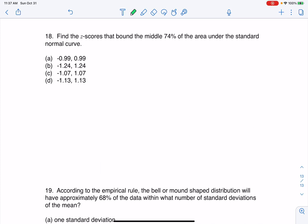Hey everyone, let's look at 18. Find the z-scores that bound the middle 74% of the area under the standard normal curve. All right, so the first thing I'm seeing is that I have z-scores and I'm on the standard normal curve.